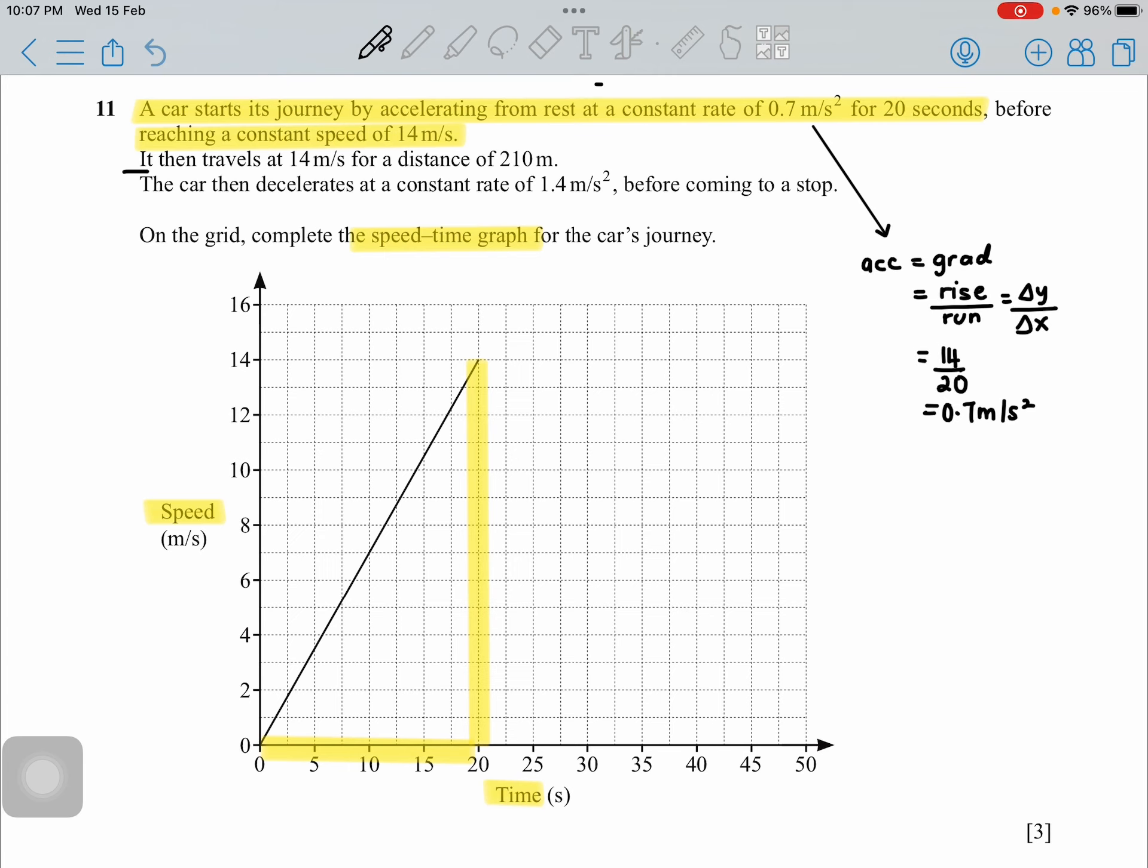The question continues by saying the car travels at 14 meter per second for a distance of 210. What does distance represent in a speed-time graph? It's exactly area below the curve or the graph.